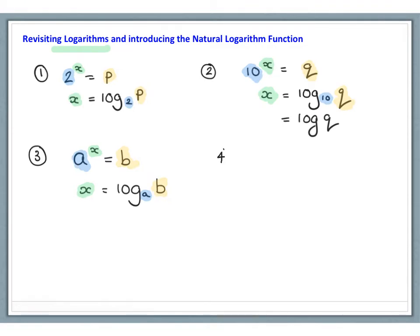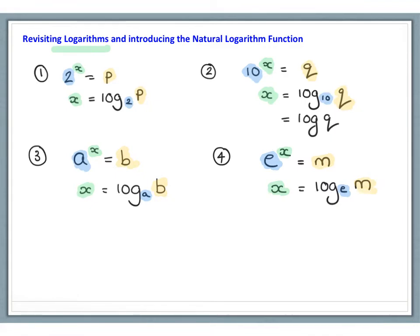If we use the exponential function from the previous lesson and say that e to the power of x equals some value m, then we know that x is equal to log to the base e of m. But log to the base e can be expressed in a special way: it is written as ln, a button you may have seen on your calculator. It stands for natural log, so we rewrite x as ln of m.